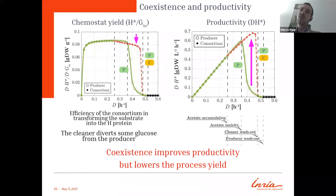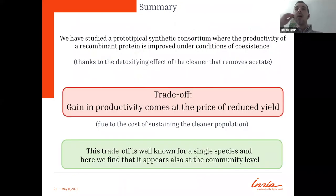So we found this trade-off. Basically, coexistence actually improves the productivity from one side, but also it lowers the process yield. To summarize what we actually found, we have studied a prototypical synthetic consortium where the productivity of a recombinant protein is improved under the condition of coexistence. And this happens because we have a detoxifying effect given by the cleaner that removes the acetate.